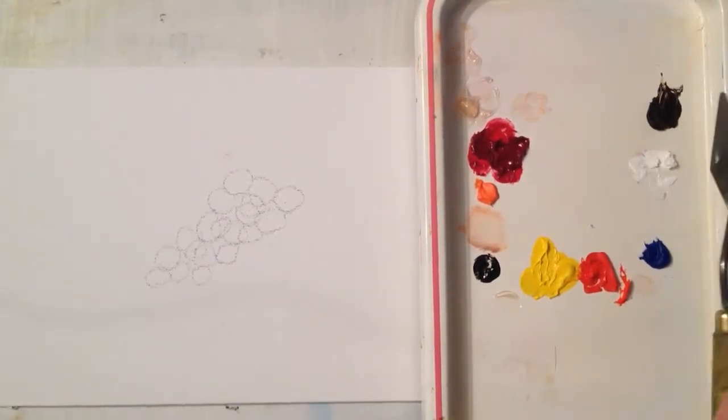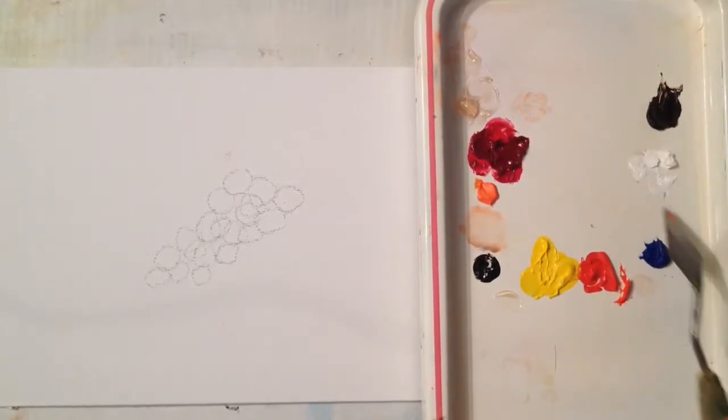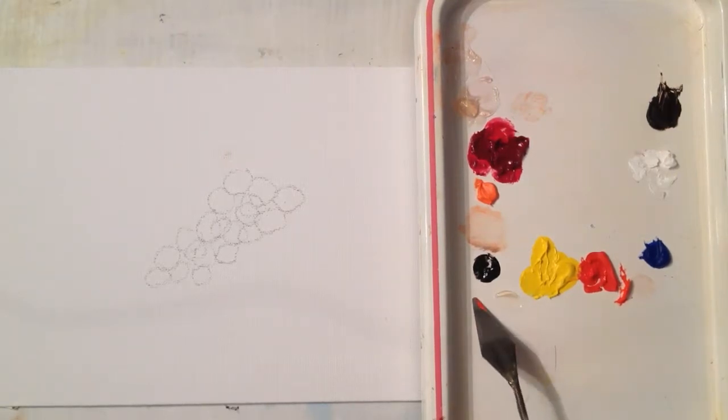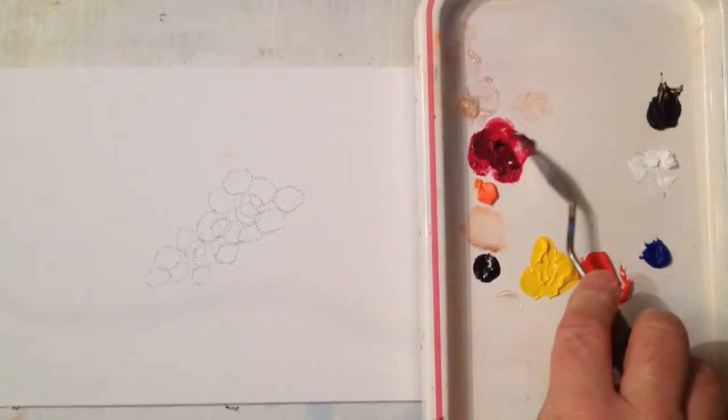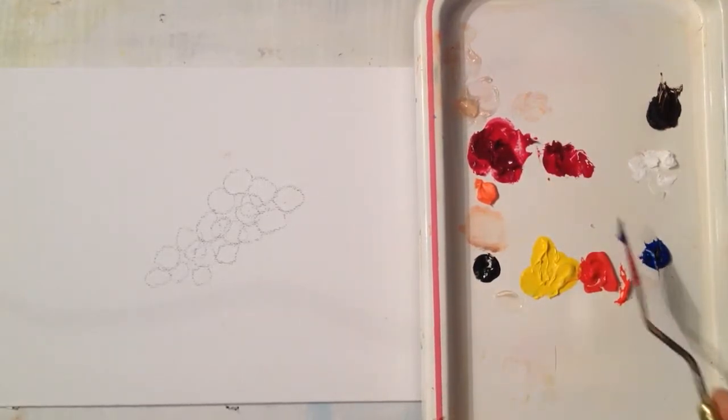The paints that I'm using today: Alizarin Crimson, Burnt Umber, White, Ultramarine Blue, Cad Red Light, Cad Yellow Light, and a touch of black. The first mixture is going to be Alizarin Crimson with Blue.